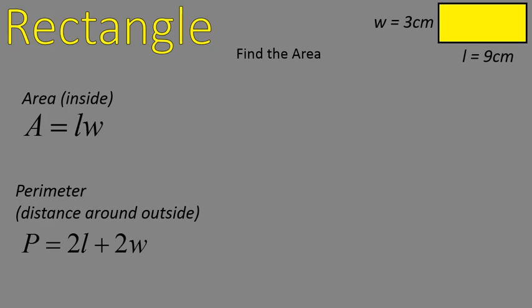The area of this yellow rectangle in the upper corner here is length times width, so that's going to be nine times three. Nine times three is 27 square centimeters. That's the area of this rectangle.